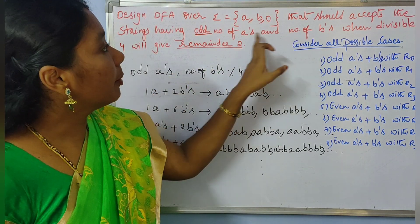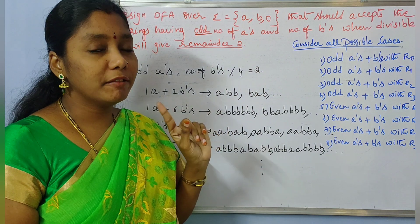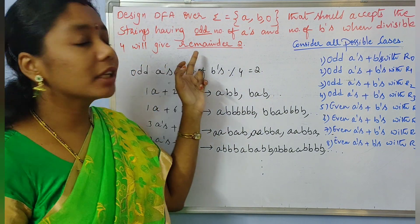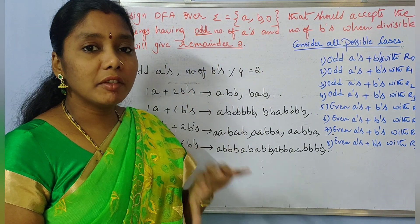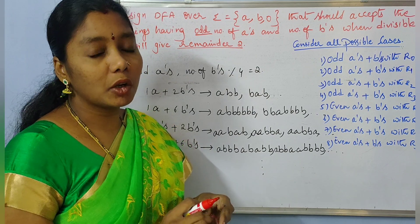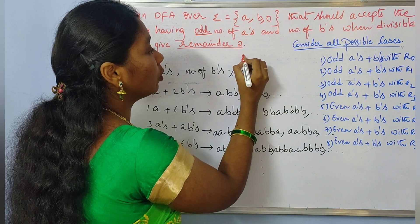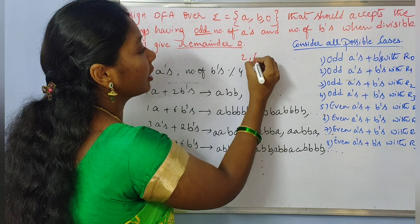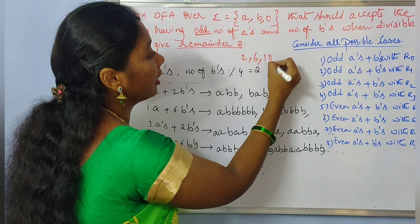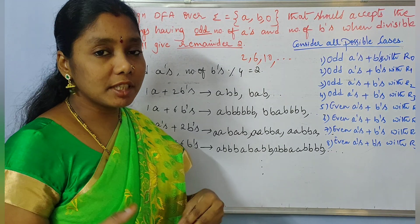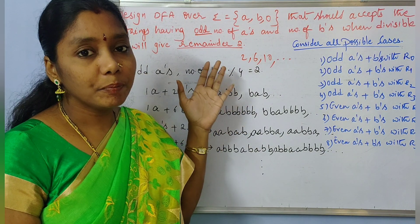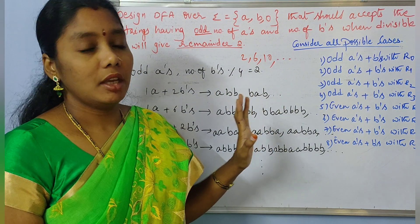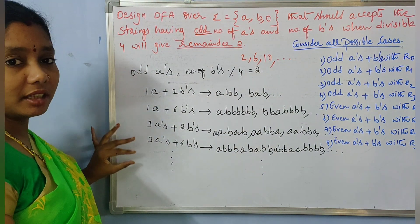The number of A's should be odd — meaning 1, 3, 5, etc. The number of B's when divisible by 4 should give remainder 2. So the valid counts for B's are 2, 6, 10, and so on — all numbers that give remainder 2 when divided by 4. Our strings must consist of either 2 B's or 6 B's or 10 B's, and so on.